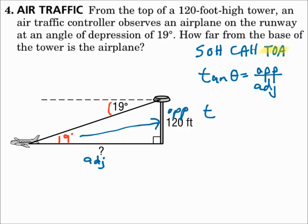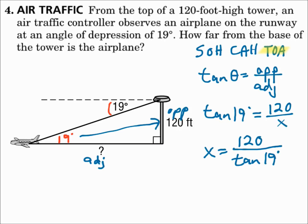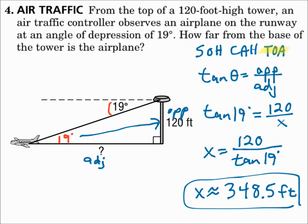Tangent theta equals opposite over adjacent. Substitute in: theta is 19 degrees, opposite is 120, and the adjacent is x. Since x is in the denominator, switch it with the opposite side. X equals 120 divided by tangent 19 degrees. When you punch that in, x is approximately 348.5 feet. Is that a logical answer? In this triangle, one side is 120 — that's a small angle — so the adjacent side would have to be a lot longer than 120 feet, and 348.5 feet makes sense.